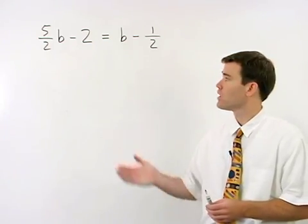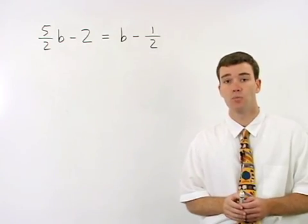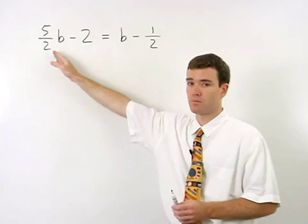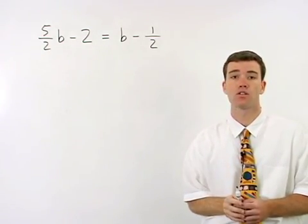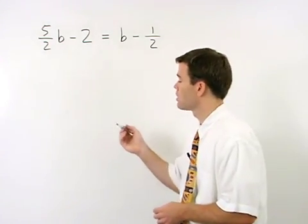In this equation we have two fractions to deal with, but notice that both fractions have a denominator of 2. What that means is we can get rid of both fractions at once by multiplying both sides of the equation by 2.